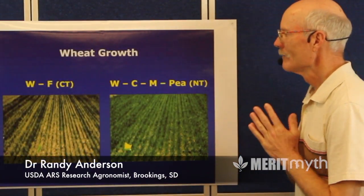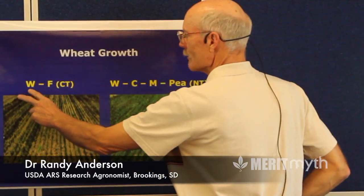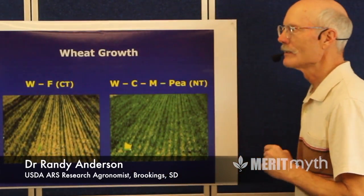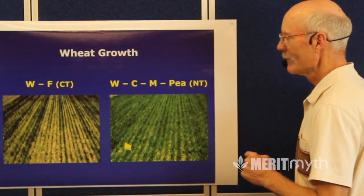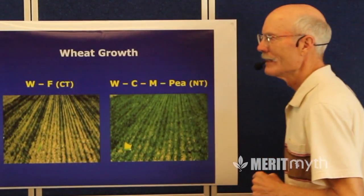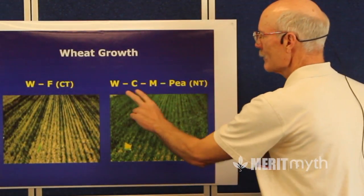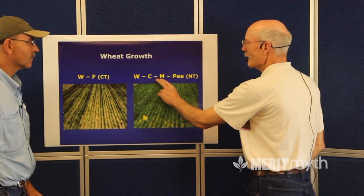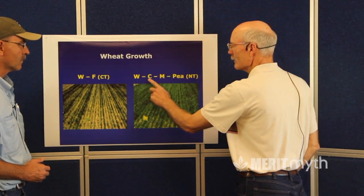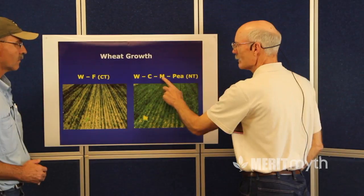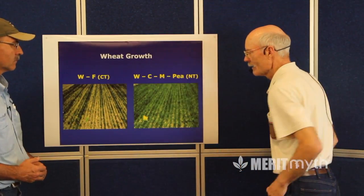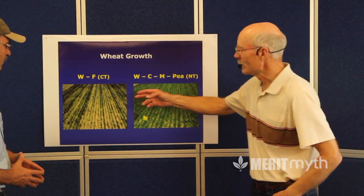This example is from the Great Plains. The standard procedure was winter wheat fallow — CT stands for conventional tillage — and this would give you a picture of the wheat in early April. This was a rotation that innovative no-tillers were doing: winter wheat, corn, proso millet, and then dry peas.